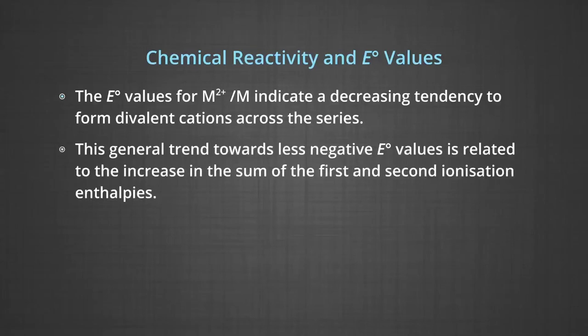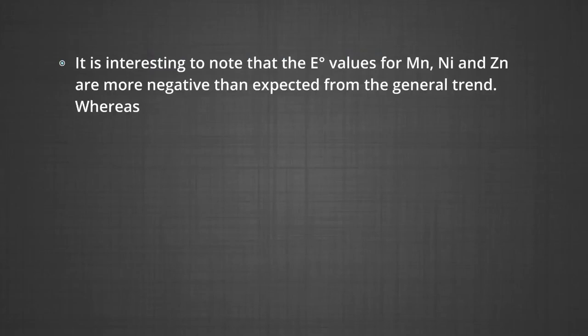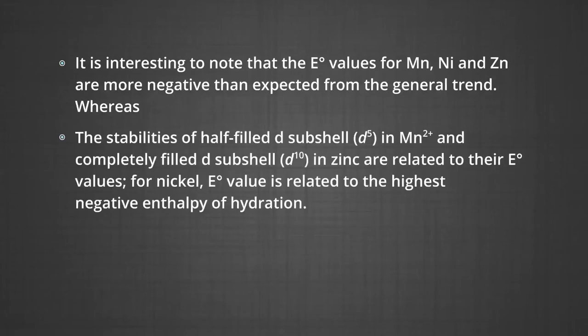This general trend towards less negative electrode potential values is related to the increase in the sum of the first and second ionization enthalpies. The E° values for manganese, nickel, and zinc are more negative than expected from the general trend. The stabilities of the half-filled D5 in Mn2+ and completely filled D10 in zinc are related to the standard electrode potential values, and the E° value for nickel is related to its highest negative enthalpy of hydration.